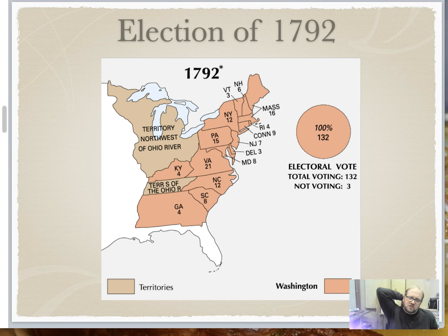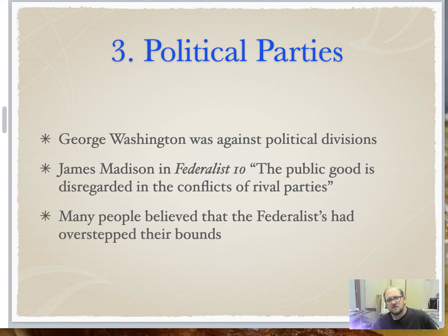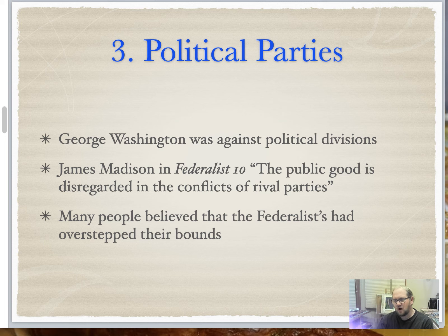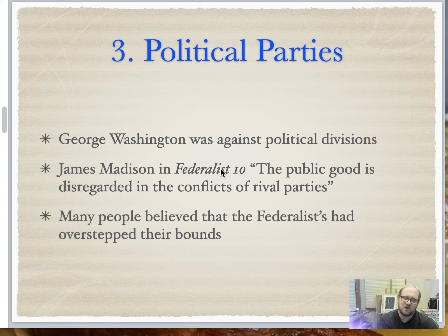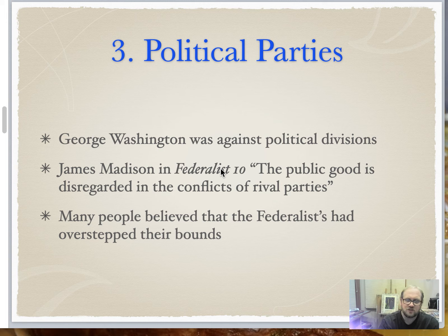In the next election, Washington won unanimously again — he's the only president to receive two unanimous votes. As Washington started his second term, we see the formation of new political parties to combat the Federalist hold on government, creating our first two-party system. James Madison had warned about this in Federalist 10: 'The public good is disregarded in the conflicts of rival parties.' But many thought the Federalists had overstepped their bounds and a rival party was needed.